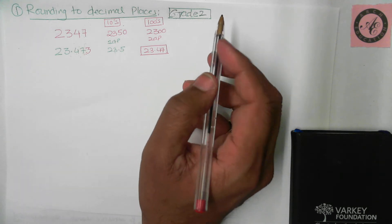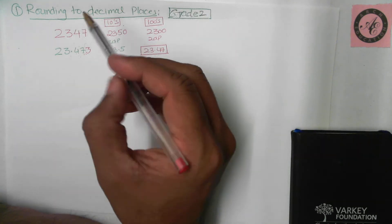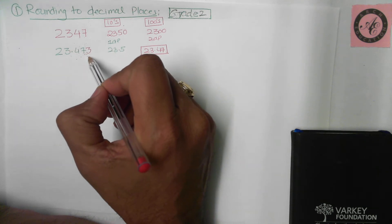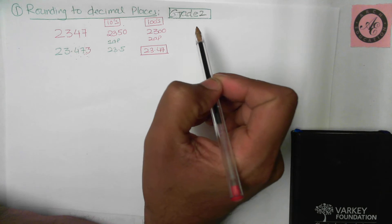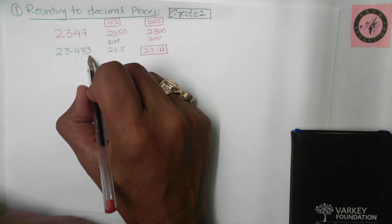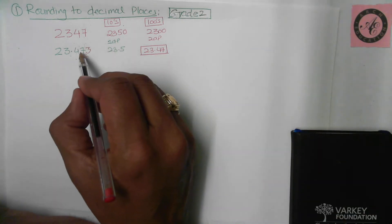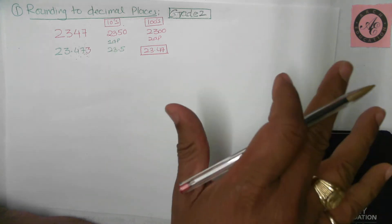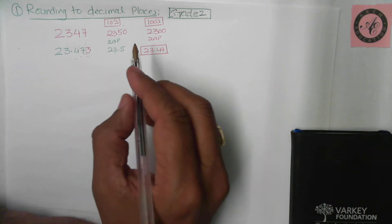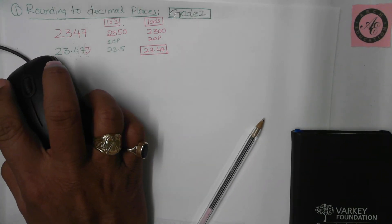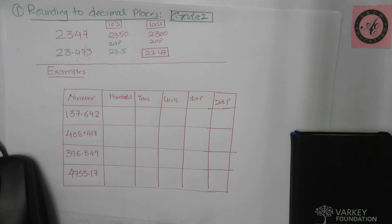It's fairly simple. You put an arrow on the place value where you want to round the number, then check the next digit. The primary school rule says: if the next digit is five and above, you give it a shove — meaning raise that digit one place up. If it is four and below, you keep it down low — meaning it stays as it is. This is rounding to decimal places.